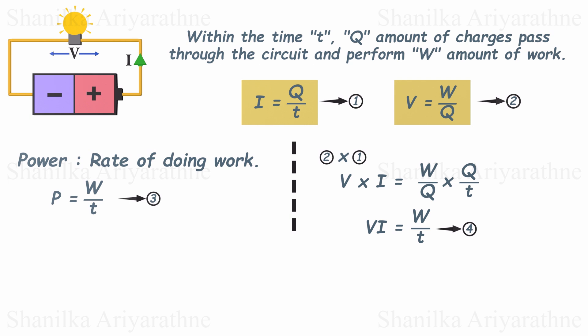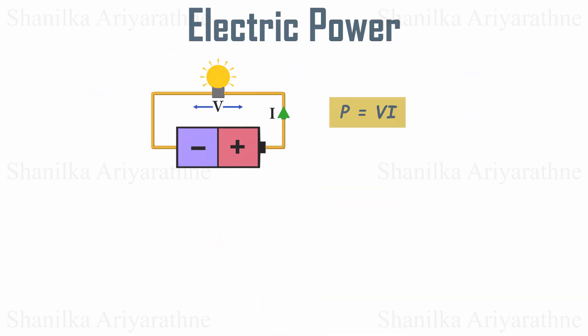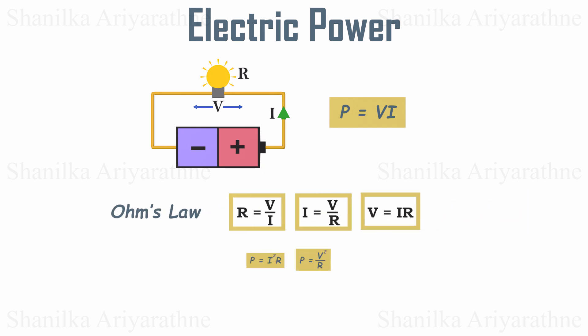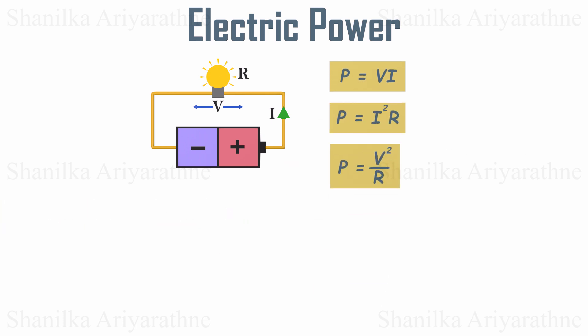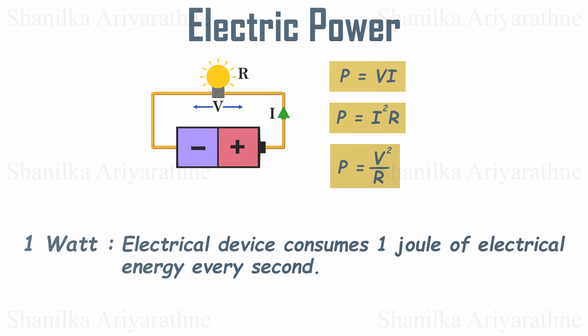Now we have three equations but many variables. Let's simplify and develop the relationship among power, voltage, and current. Multiplying equations 1 and 2, we get that voltage times current equals work divided by time. Comparing this to equation 3, we can say the power consumed by an electrical device equals the voltage across it times the current through it. We measure this power using watts. If any electrical device consumes one joule of electrical energy every second, we say it consumes one watt of power.